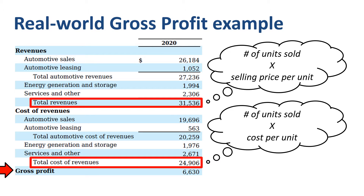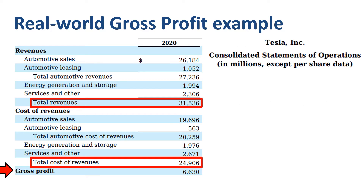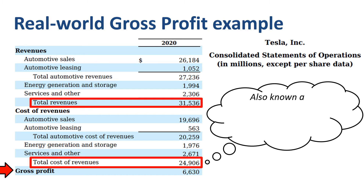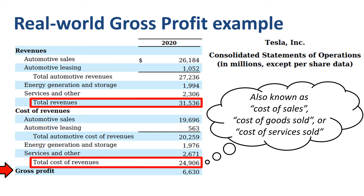Now the term cost of revenue might be a new one for you. This is also known as cost of sales, cost of goods sold, or cost of services sold. If you sell products, then those products have a cost of goods sold. If you sell services, then those services have a cost of services sold.